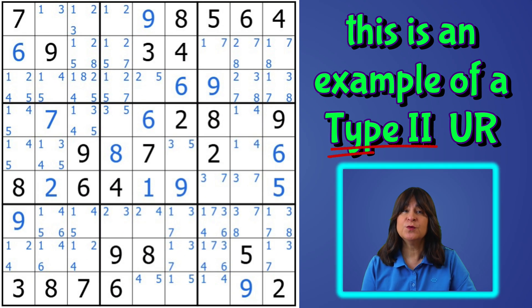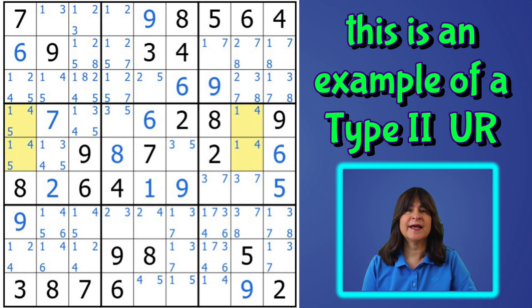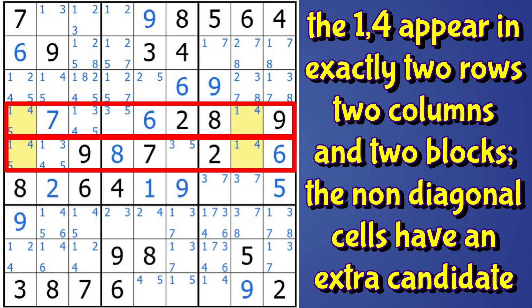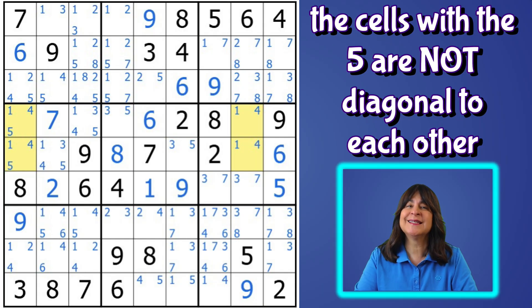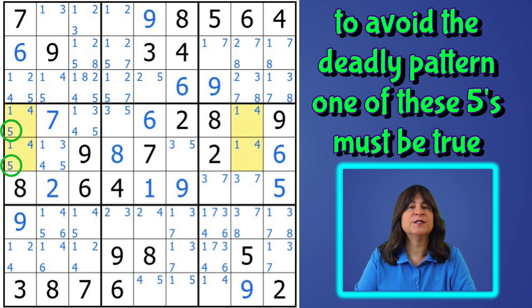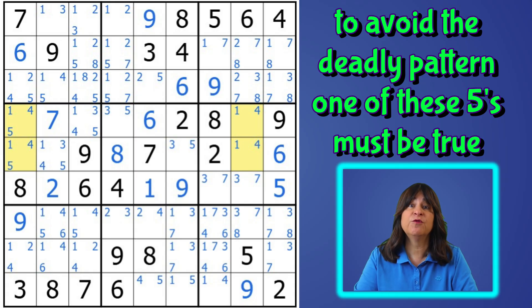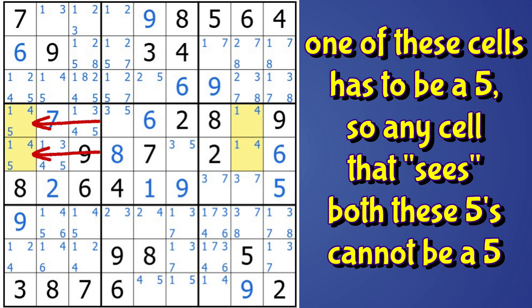Let's move on to a type two unique rectangle. In this case, we have two non-diagonal cells that have the same one and only one extra candidate. Here we have the one and four, again in two rows, two columns, and two blocks. And these two non-diagonal cells — meaning they are not diagonal to each other, they are in the same column — have the same one and only one extra candidate, the five. So now we know that one of these fives has to be true, or we would end up with a deadly pattern with the one and four being in any of these four cells. One of these cells has to be a five, but we don't know which one. So any cell that sees both of these cells with the five can't be a five and can be eliminated.